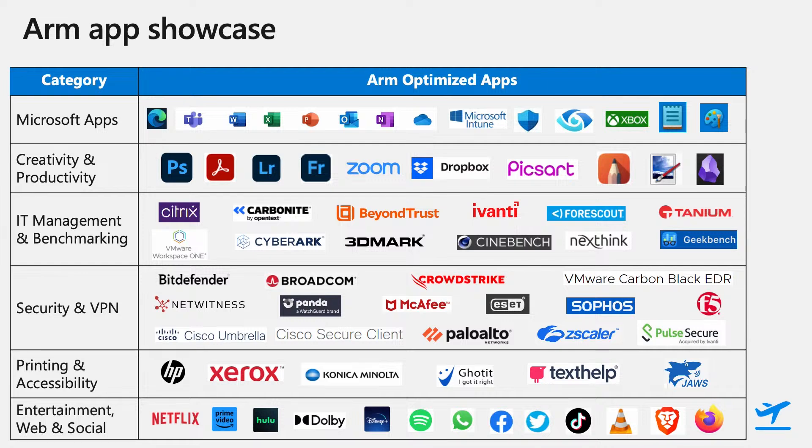IT management and benchmarking is very crucial for commercial customers. Citrix Workspace, Carbonite, BeyondTrust, Ivanti Endpoint, ForScout, Tanium, and VMware Workspace ONE all allow management of ARM devices. For benchmarking, CyberArk, 3DMark, Cinebench, NexThing, and Geekbench are applications that support ARM devices.